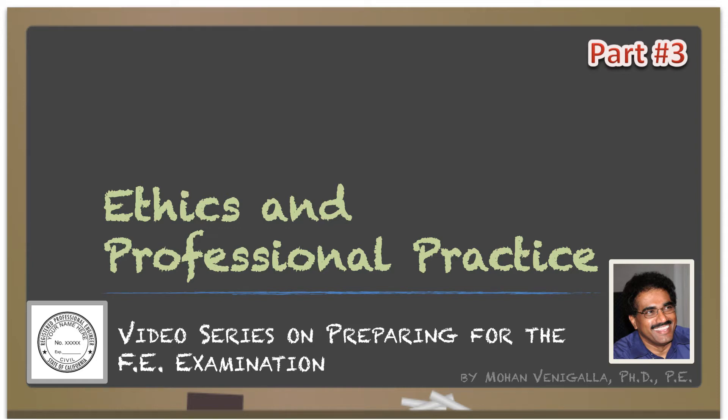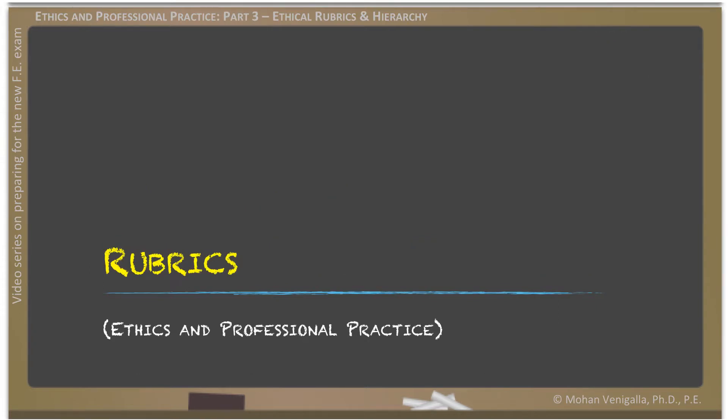Welcome to part 3 of the video series on ethics and professional practice. In this video we are going to talk about rubrics that are to be considered in engineering ethics. By rubrics for ethics, I don't mean a moral compass — moral compass is something we all have inside us, and that's what we use when you are facing certain situations and dealing with some people.